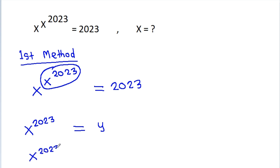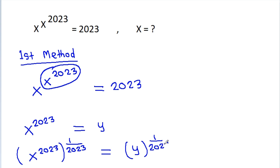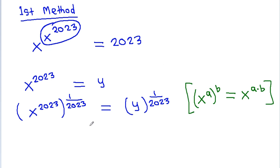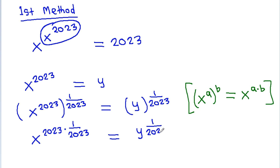So x^2023 raised to the power 1/2023 equals y^(1/2023). Using the rule x^(a^b) = x^(a×b), it becomes x^(2023 × 1/2023) = y^(1/2023). The 2023s cancel, so x = y^(1/2023).